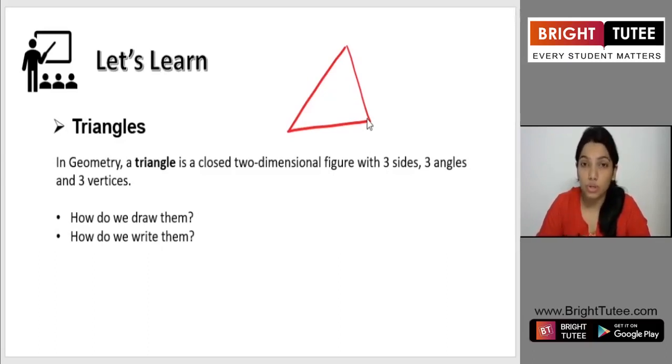Clearly we can see this is a closed figure, right? All the points are joining each other and it has got how many sides? One, two and three, so total three sides. How many angles? We clearly see it has got three angles. And how many vertices? Three vertices. This is a triangle.